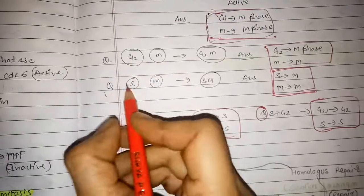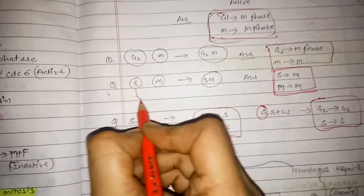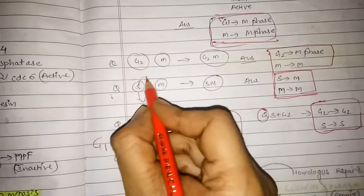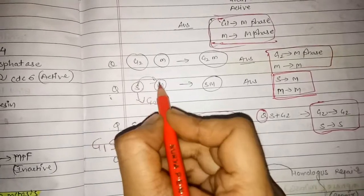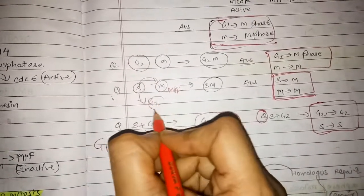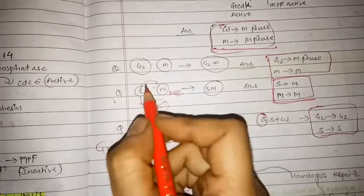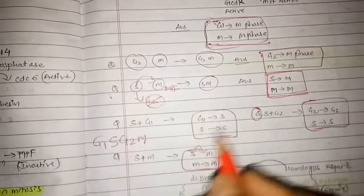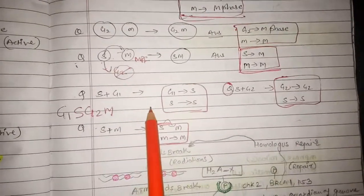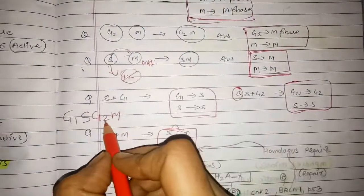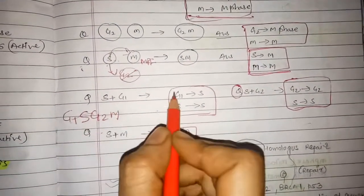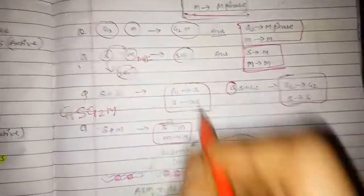Except in the S plus M situation — after S it is expected to go into G2, but why is it going into M? Because MPF is already active, so G2 can be skipped and the cells are already replicated. Now for this fourth condition: the cell which is in G1 stage will go into S stage, and the S stage will remain in S stage.